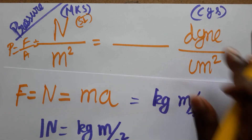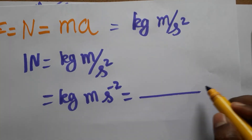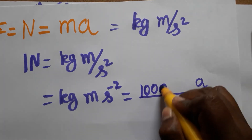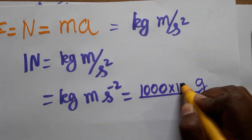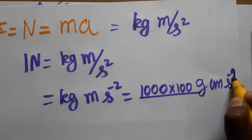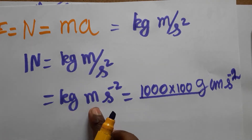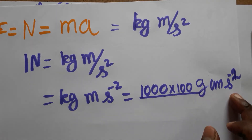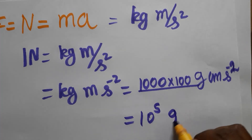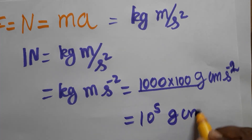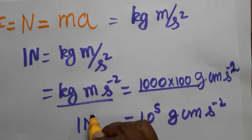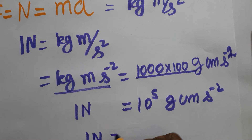The same unit I am going to convert to dyn — that is centimeter-gram-second. Kilogram to gram is a factor of thousand; meter to centimeter is a factor of hundred. Writing the same unit in CGS system: we get 10⁵ gram·centimeter·second⁻². So one Newton is equal to 10⁵ dyn.